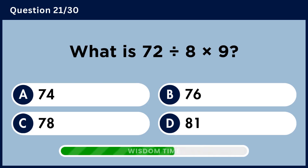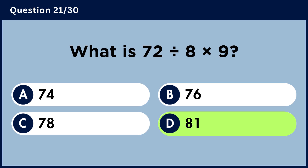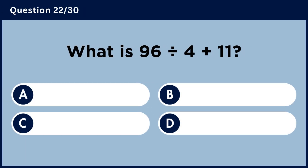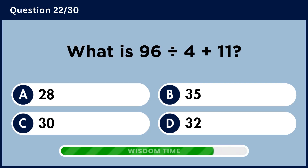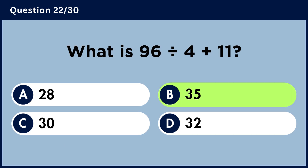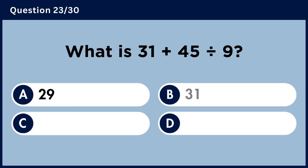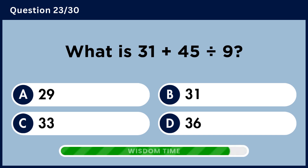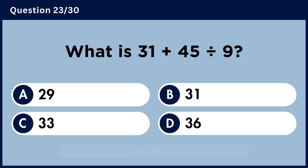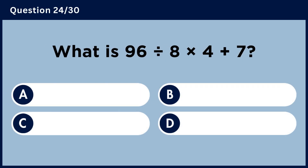What is 96 divided by 4 plus 11? Answer D, 36.